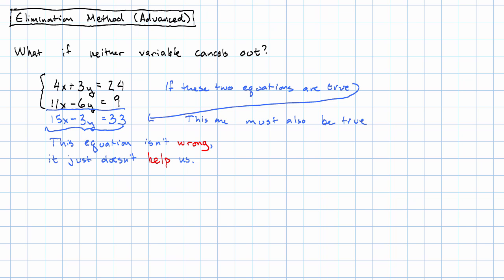Our goal was to get rid of one of the variables. When this happens, when neither one of the variables will cancel out, we need to do something to the equations first.